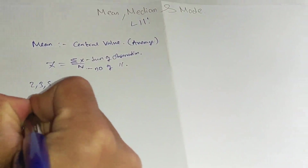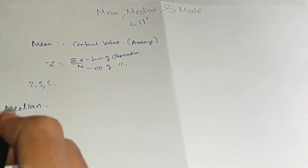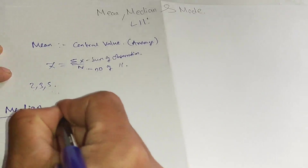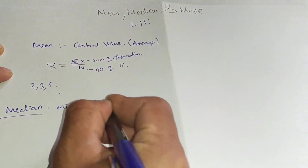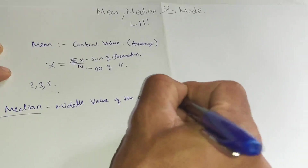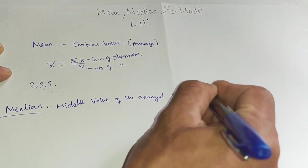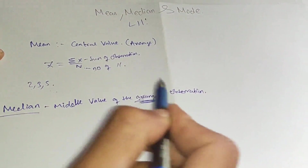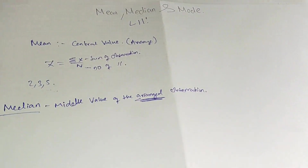Next is median. Median talks about the middle value of the arranged observations — arranged either in ascending or descending order.